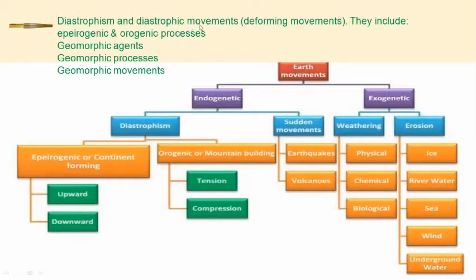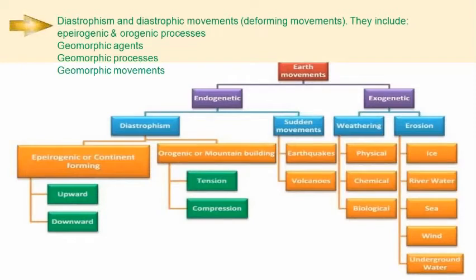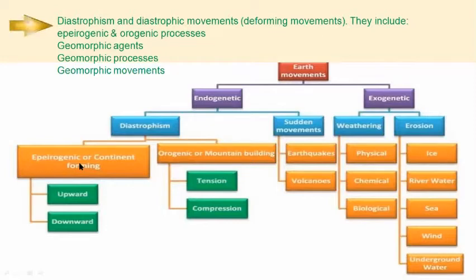Diastrophic movements are the deforming movements. These deforming movements or diastrophism can be categorized into epeirogenic or epeirogenetic movements — also referred to as continent forming — and orogenic movements, which can be referred to as mountain forming.